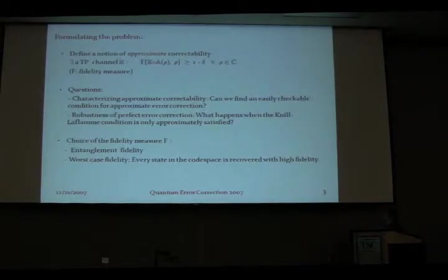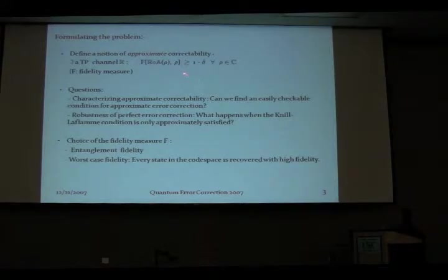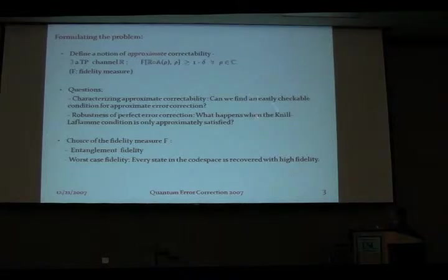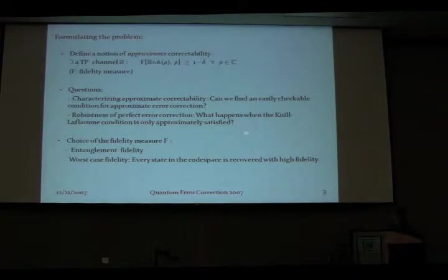We can formulate the problem of approximate correctability in a similar fashion, defining approximate correctability where a channel is said to be approximately correctable on code space C if there exists a recovery map such that the action of R composed with A gives us back a state which is very close to the initial state in fidelity. We can ask: is it possible to characterize approximate error correction in the sense that we can find an easily checkable condition? We can also ask a related question on the robustness of perfect error correction — what happens when the condition is only approximately satisfied?